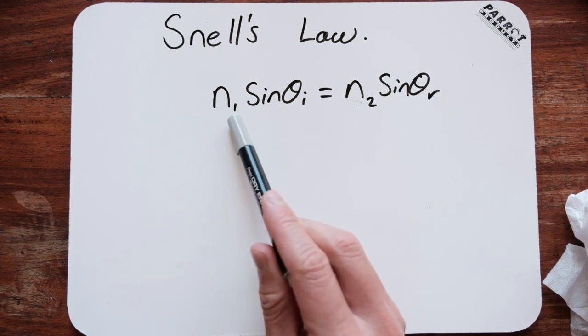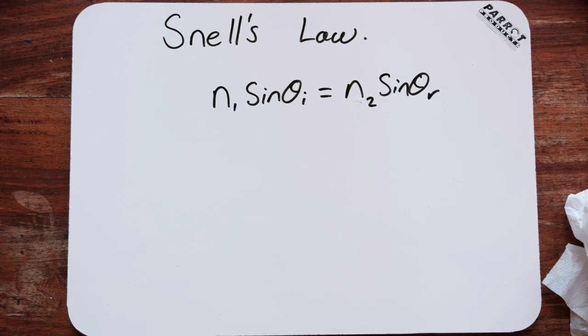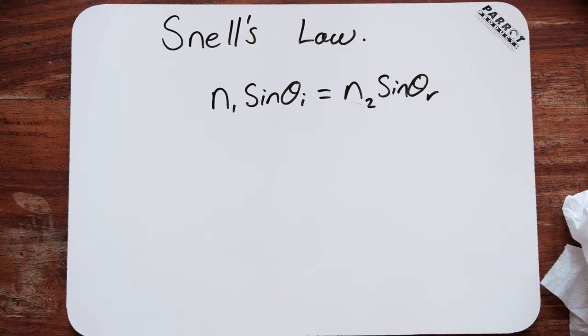And essentially, because we have four unknowns in this equation, you can be given any of those three to calculate the last one. So as you can see, this is quite a nice, simple equation, especially for Snell. And essentially, you can use the gradient of the graph as the constant, so that is the relationship between the two optical media.